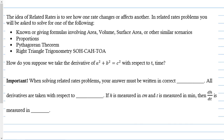We're going to work with proportions, and the proportions are mostly with similar triangles. We're going to use the Pythagorean theorem, and then we're going to use trigonometry — the angles of a right triangle and the sides of a right triangle. This section is basically area, volume, and surface area of solids.